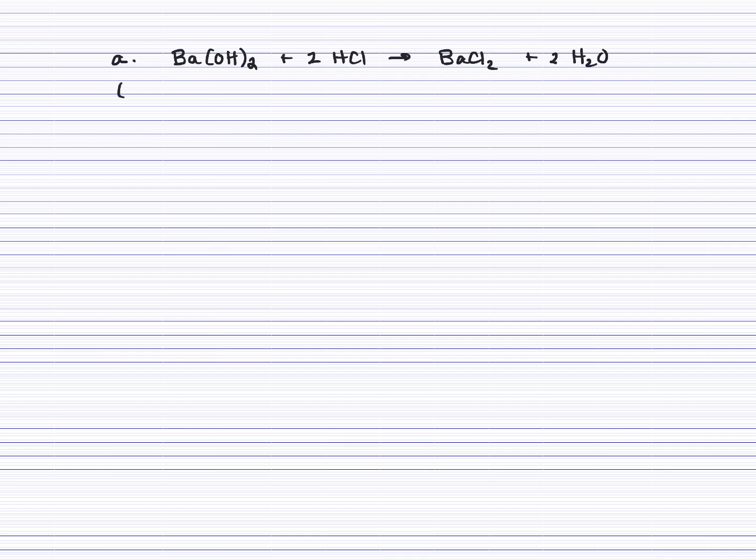So I'm going to start by finding the moles of barium hydroxide. I'm going to take its molarity and multiply it by its liters. Be sure you're in liters. So that will be 0.00505 moles of my barium hydroxide. And then I can go ahead and do a mole ratio. So moles of barium hydroxide to moles of our HCl. That's a 2 to 1 ratio.